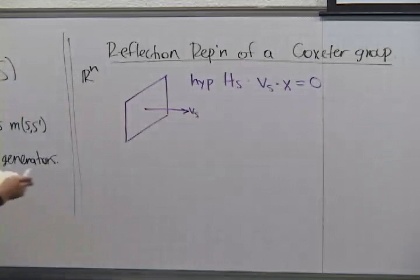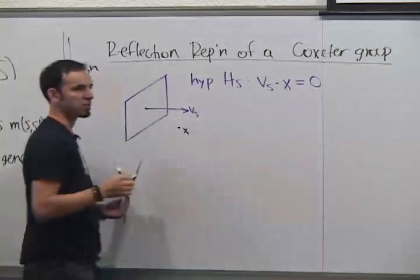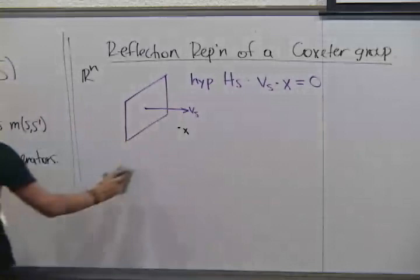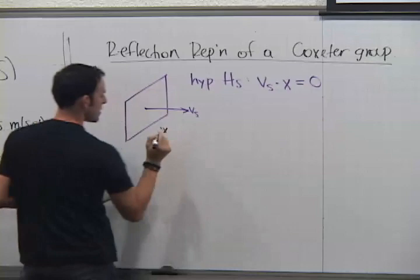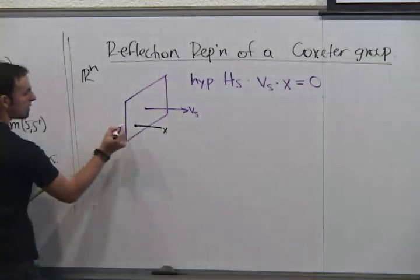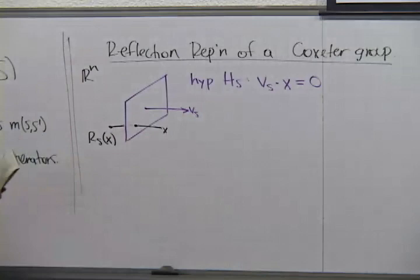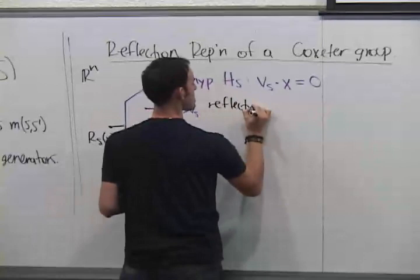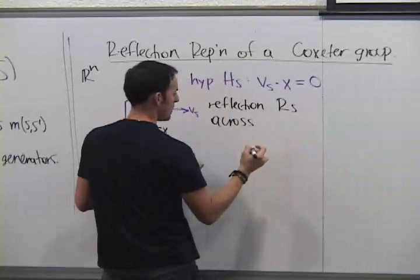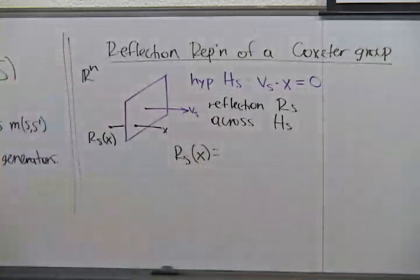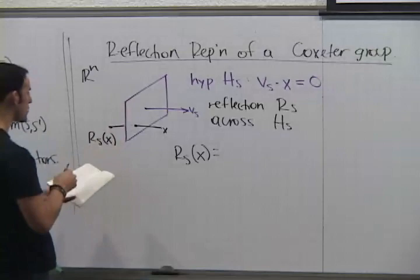I want to talk about reflections. What's a reflection? If we have a point X off the hyperplane, we reflect it orthogonally across the hyperplane. The way you do that is you find the orthogonal projection and then just double it. This gives the reflection Rₛ of X across hyperplane Hₛ. Now I want to write down a formula for this reflection — this is an exercise in linear algebra.